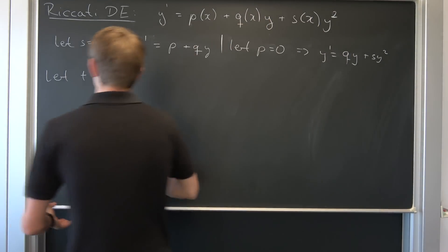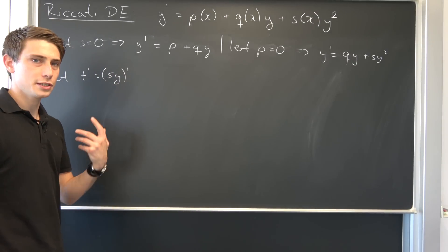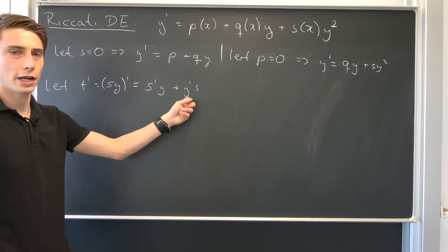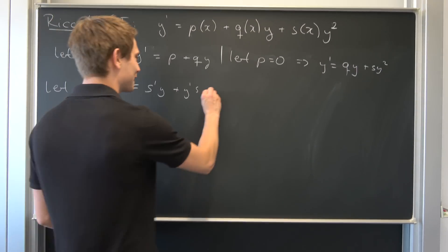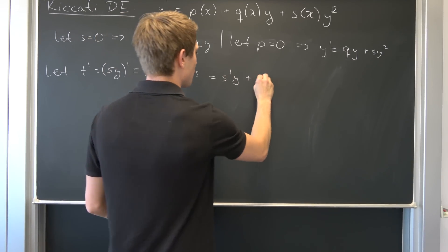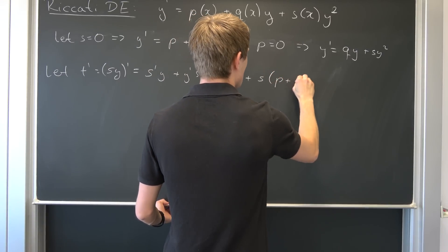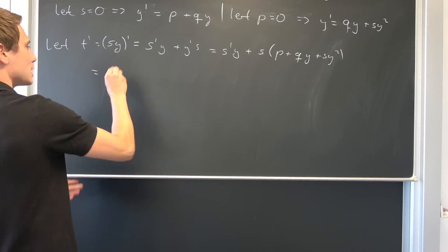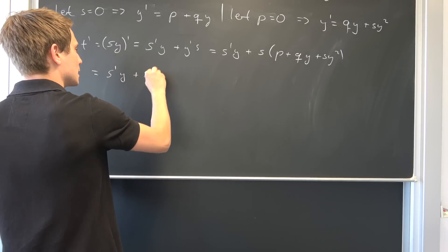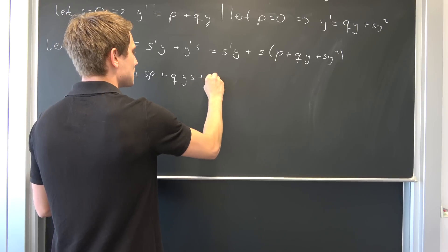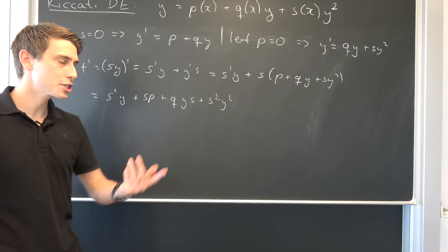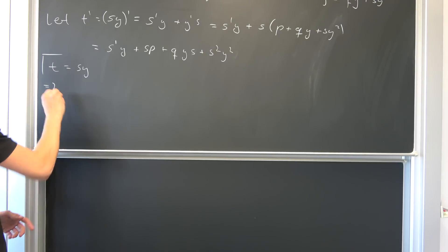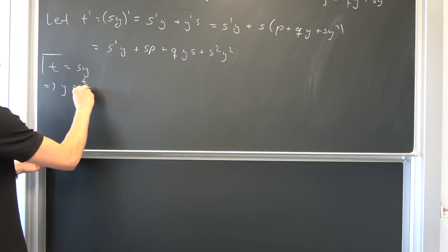So why not differentiate both sides and see what we get. t prime is nothing but s times y prime — we have a product here, so we use the product rule: s prime times y plus y prime times s. We notice we have y prime here, so let's plug in the definition for y prime: s prime times y plus s times (p plus q times y plus s times y squared).